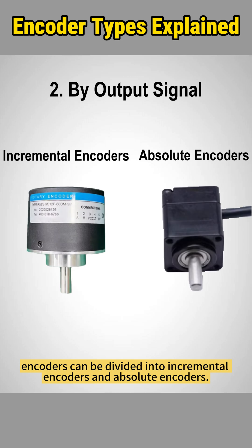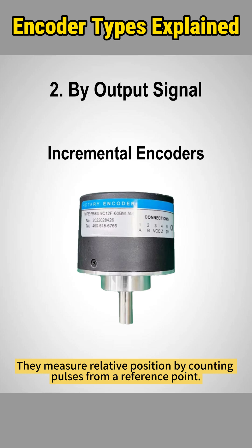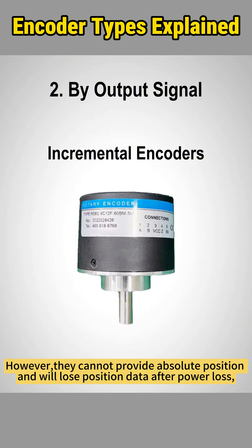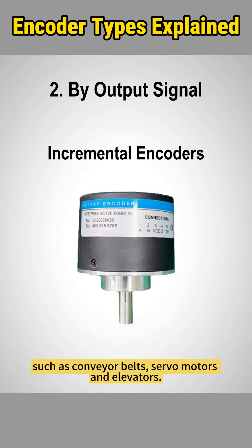By output signals, encoders can be divided into incremental encoders and absolute encoders. Incremental encoders generate pulse signals to track angular or linear movement. They measure relative position by counting pulses from a reference point. Their advantages lie in their simple structure and cost-effectiveness. However, they cannot provide absolute position and will lose position data after power loss, requiring homing upon restart. They are widely used in position control and speed monitoring applications such as conveyor belts, servo motors, and elevators.